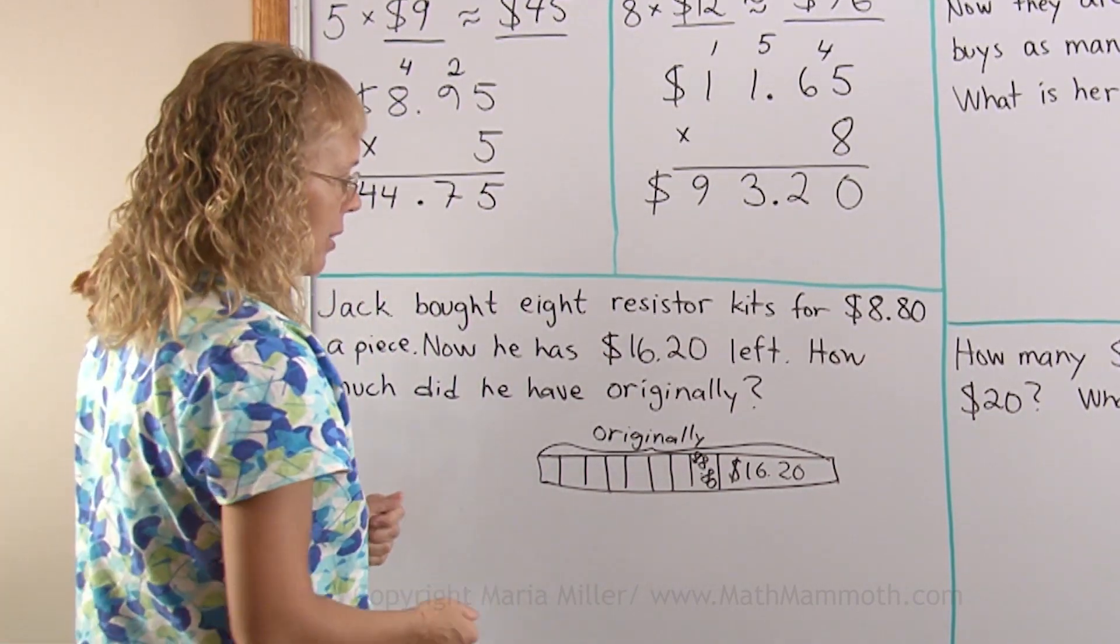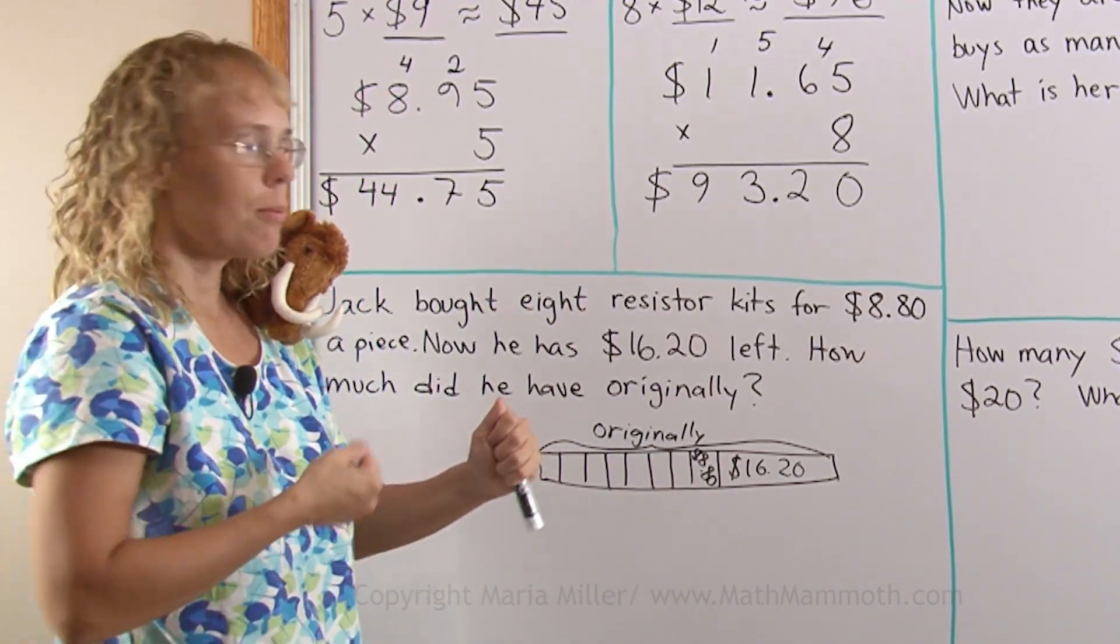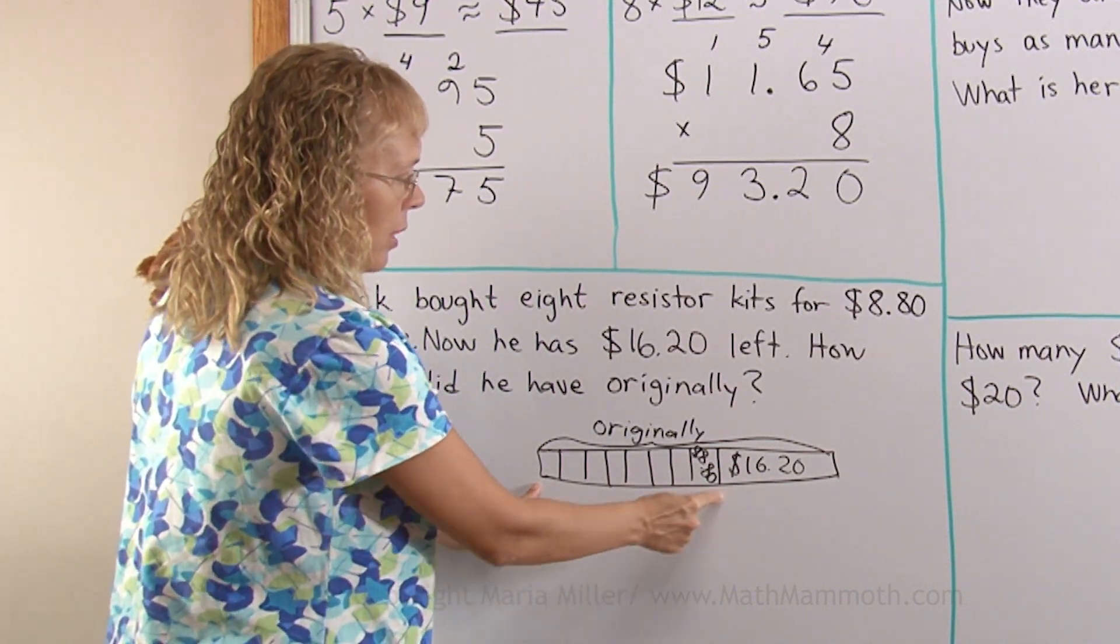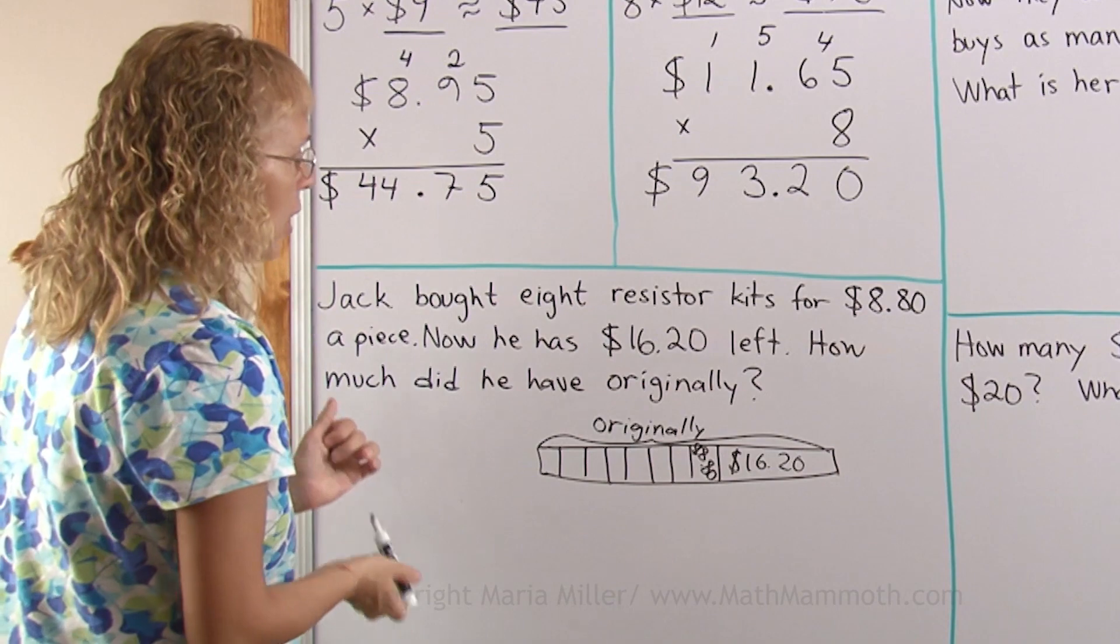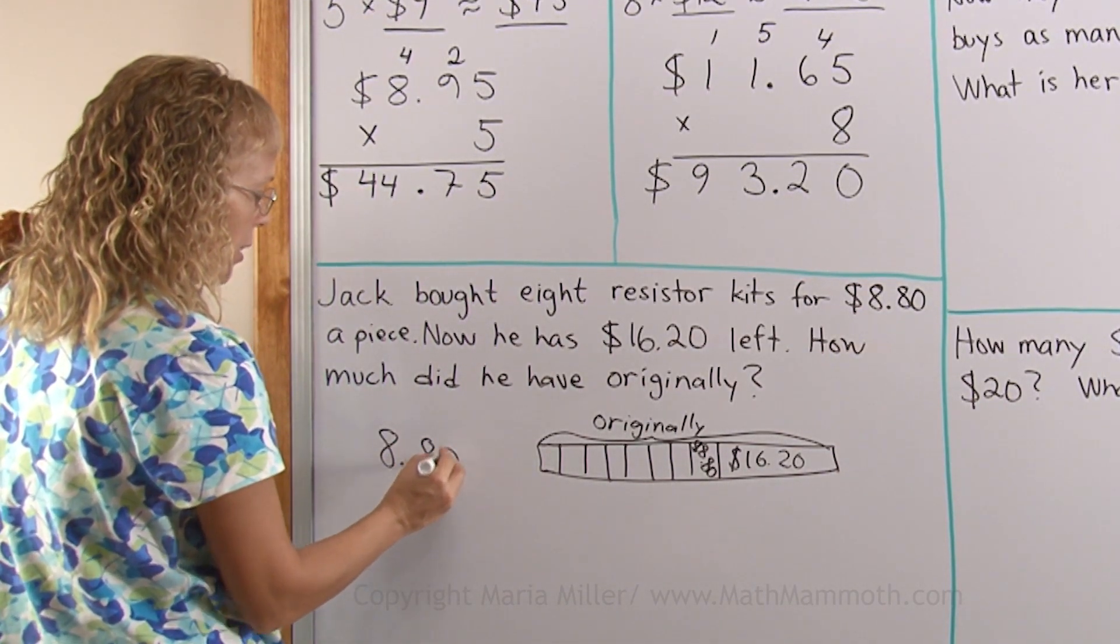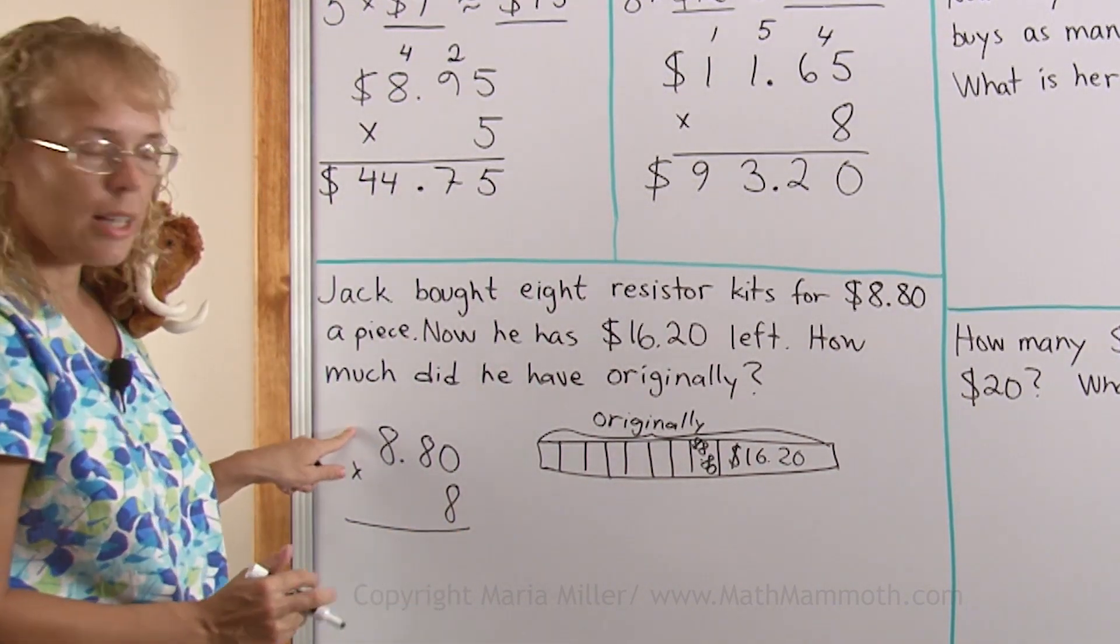But to help us, since these are all the same, there's 8 parts the same, we can multiply first. We can multiply to find out this much. And then we add the $16.20 and then we find how much he had originally. So first, to multiplying. $8.80 times 8. If I want to estimate this, I would round this to $9. And 9 times 8 is 72. So I expect my answer to be close to $72.